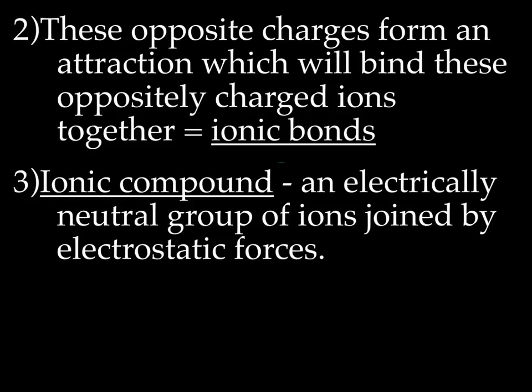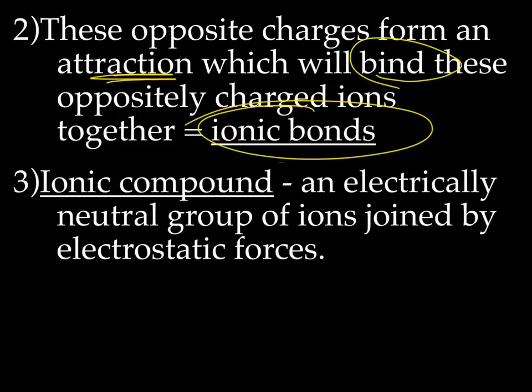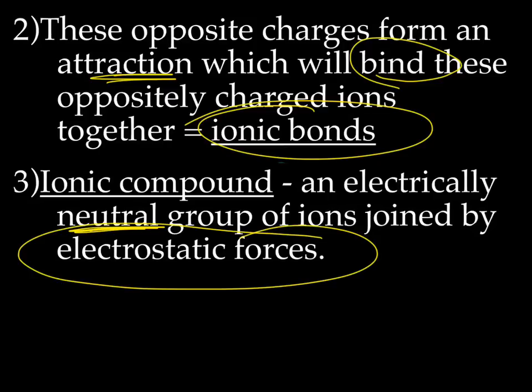So these opposite charges form an attraction that is going to bind these guys together. They're going to hook up, and that's called an ionic bond. An ionic compound is when these cations and anions hook up. They form an electrically neutral group of ions joined by what we call electrostatic forces. That's a fancy way of saying that positives and negatives are attracted to each other.